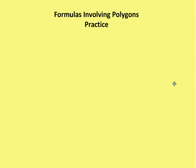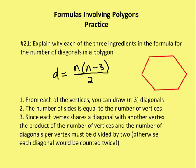We're going to explain one of the formulas that's part of the problem. Number 21: explain why each of the three ingredients in the formula for the number of diagonals exists. The number of diagonals in a polygon equals n times (n minus 3) divided by 2.